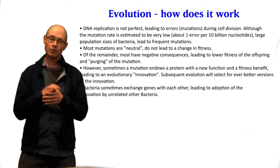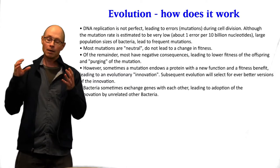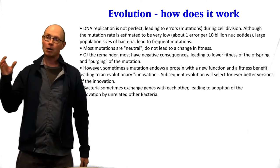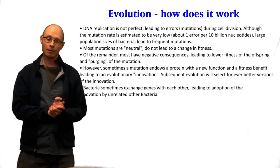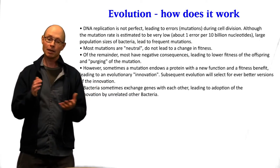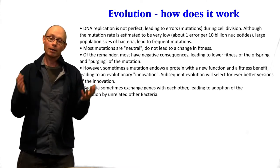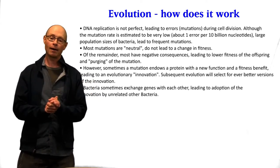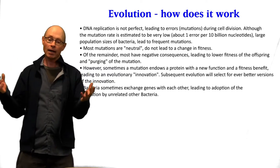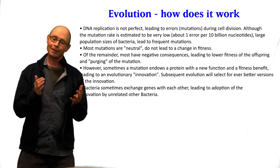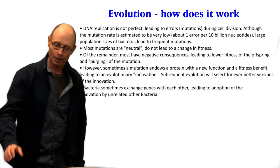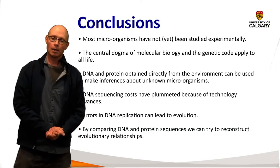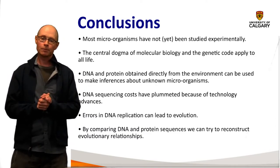Another interesting part of evolution is that bacteria sometimes exchange genes with each other — horizontal gene transfer — meaning a certain process can be adopted by another unrelated organism. It's kind of like what happens in our economy: we develop a nice new process in Canada, and the US or China runs away with it. These things happen among microbes too.